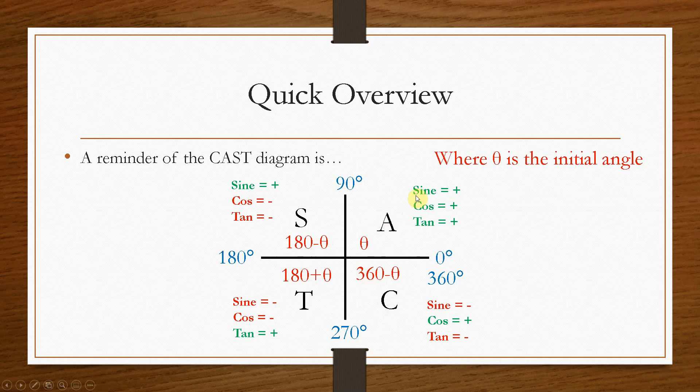So here in this quadrant, sin, cos and tan are all positive. In the S quadrant, sin is positive, cos and tan are negative. In the T quadrant, sin and cos are negative, tan is positive. And in the C quadrant, cos is positive and tan and sin are negative.